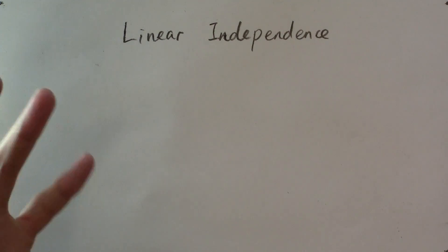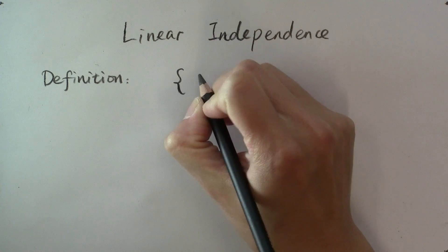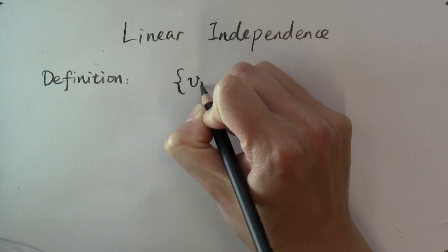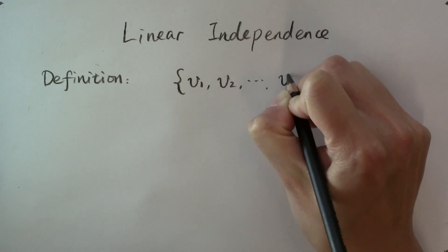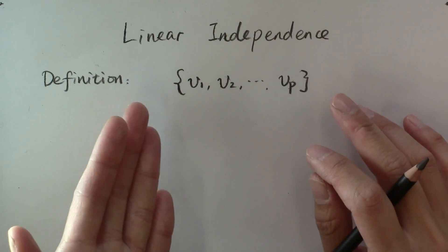So what does it mean for a set of vectors to be linearly independent? A set of p vectors, let's say we have v1, v2, up to vp, they're said to be linearly independent of each other.